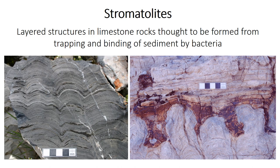Stromatolites are quite common in the geological record, although these ones are much younger than the age of the Earth and the ones that we'll talk about. Stromatolites are thought to form when a sticky layer of microscopic living bacteria growing on top of the structure trap tiny grains of sediment and bind them together. So discovering stromatolites in ancient rocks would be a sign that there was life there.